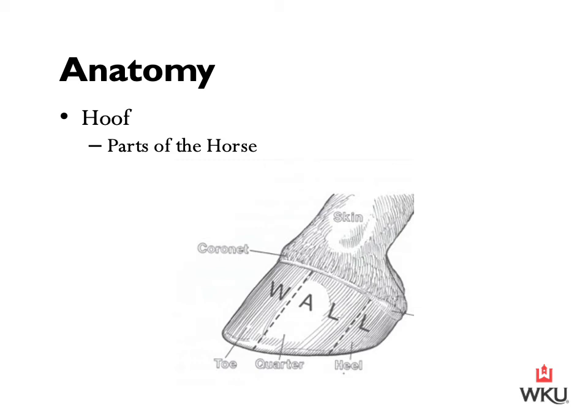When looking at hoof structure and growth, the hoof corresponds as a body part to the last digit of the middle finger in humans. It has evolved to support the full load of a horse as he propels himself across broken ground, over jumps, spins, and turns. The hoof wall — made up of the toe, the quarter, and the heel — is composed of keratin. It is a modified extension of the skin, much in the same way that fingernails grow out from the cuticles.